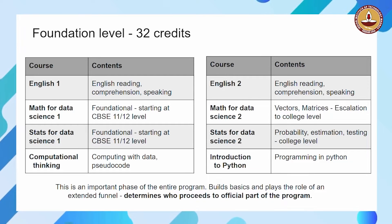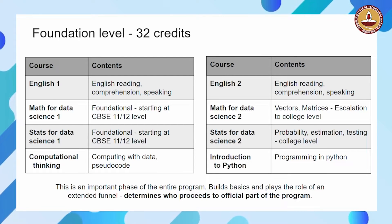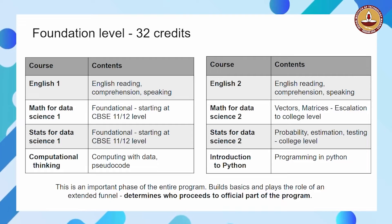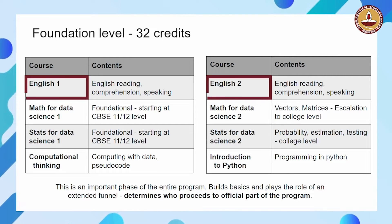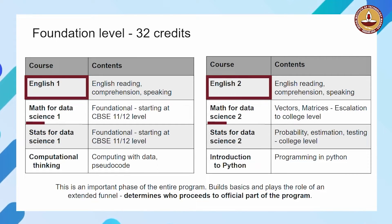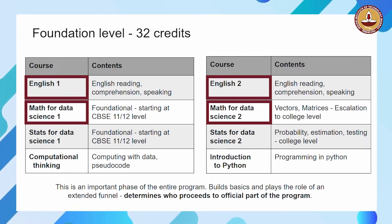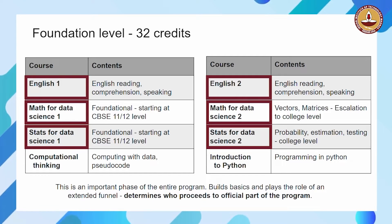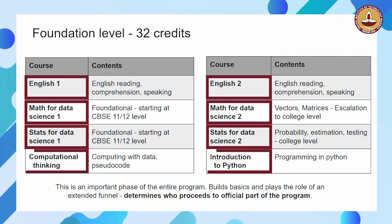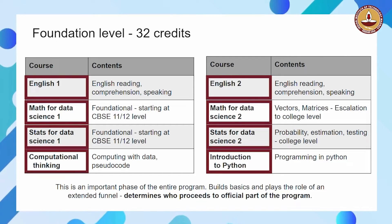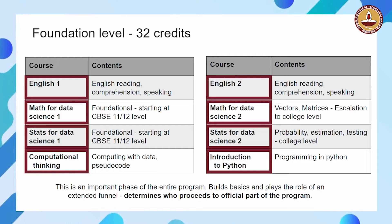What are the courses in the foundation level? There are eight different courses or subjects. There are two English courses — English 1 and English 2. There are two math courses — Math 1 and Math 2. There are two statistics courses — Stats 1 and Stats 2. And two programming courses — Computational Thinking and Introduction to Python.